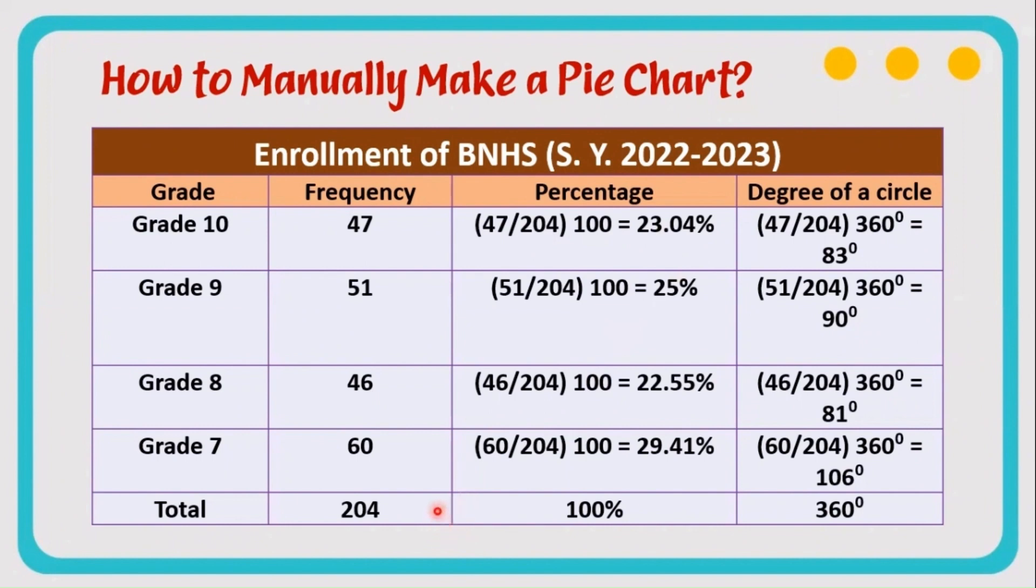Here are some steps to manually make a pie chart. From the pie chart on the last page, we can have this table. The first column here reflects the grades. We have grade 10 until grade 7. We also reflect here the total, and then frequencies. The total number of enrollees is 204, and then for the third column we have the percentage. This is how we're going to solve for the percentage that we reflect in each section.